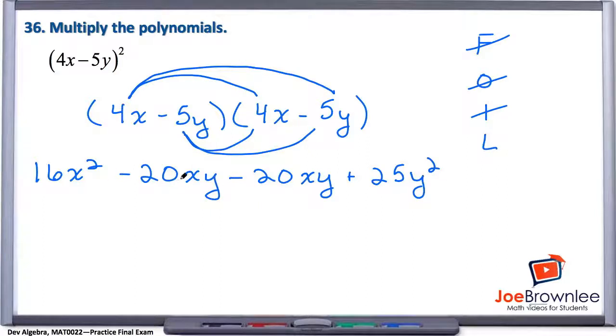And now, at this step, we want to combine our like terms. So we can combine our middle terms here. There are no other x squareds, no other y squareds. So this 16x squared can just come down.